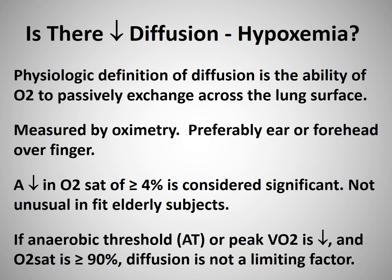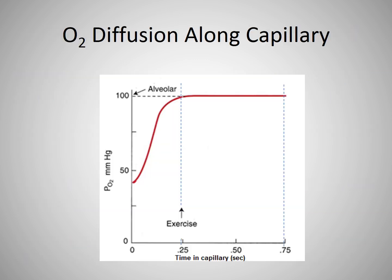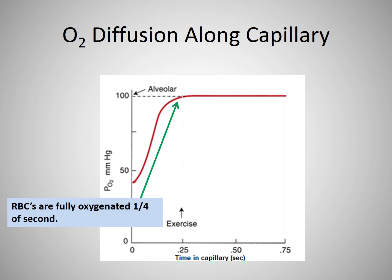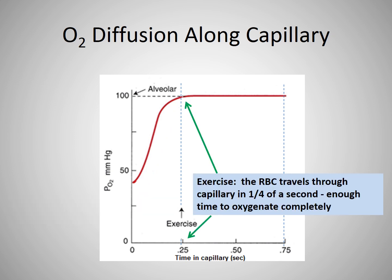Another point is that if a subject has a reduced anaerobic threshold, make sure to determine if the patient may have been hypoxic at that point to determine if that may or may not have been a contributing factor. Normally, blood spends approximately three quarters of a second traveling through the pulmonary capillaries, and it is fully oxygenated in a quarter of a second. During exercise, when blood travels through the capillary in just a quarter of a second, that is still just enough time for it to become fully oxygenated.